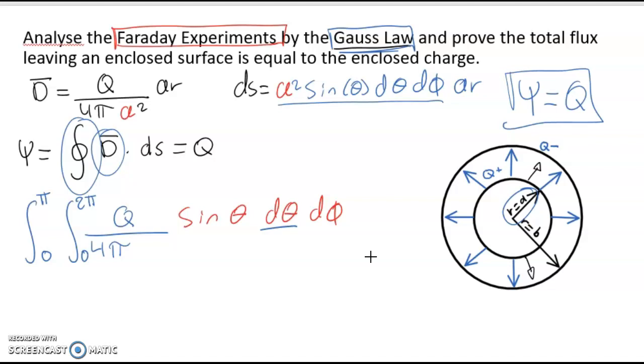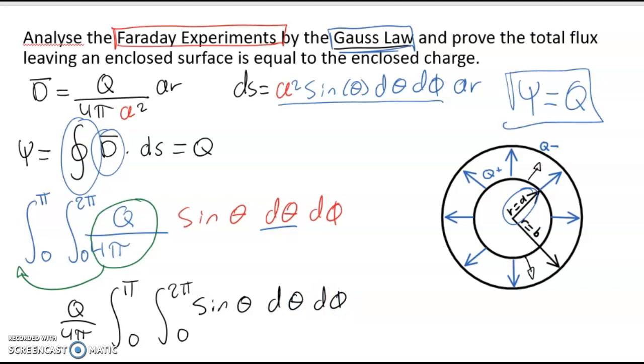Perfect. Now, what else? We'll start taking out the constant values. What is going to be constant? Anything that's not theta or anything that's not phi. And, as we can see, we get a constant Q, a constant 4, and a constant π. So, this can go out of the equation. If that's the case, we will have Q over 4π, integration from 0 to π, and integration from 0 to 2π, of the sine of theta, dθ, dφ.